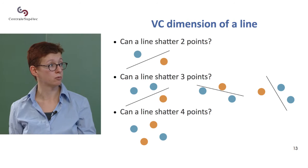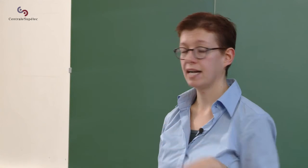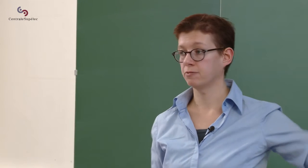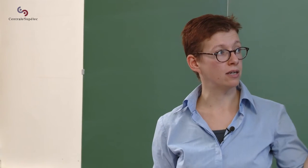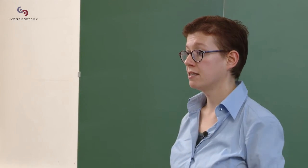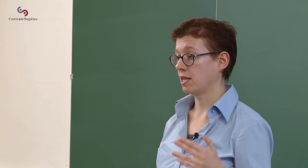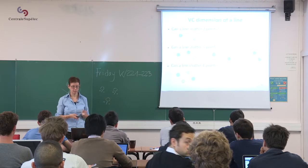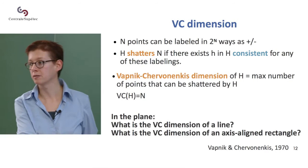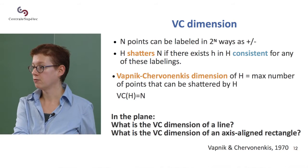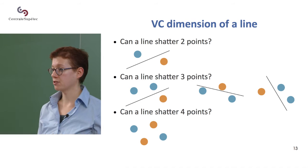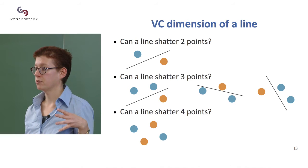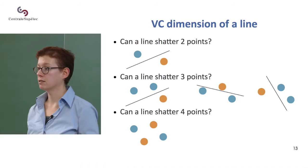If I want to separate those points, I need to draw two lines. My example here doesn't prove that you cannot shatter four points. To prove formally that a line cannot shatter four points, you need to prove that there is no combination of four points for which a line can separate them for any labeling. There are configurations of three points that you can shatter with a line, but no configurations of four points, so the maximum number — the VC dimension — is three.